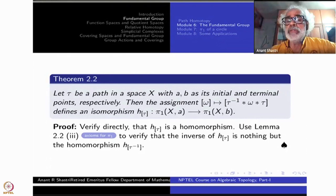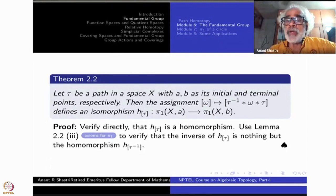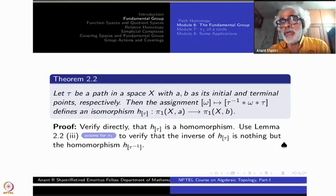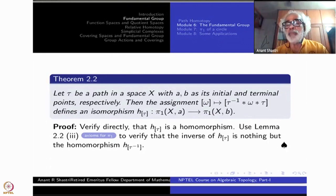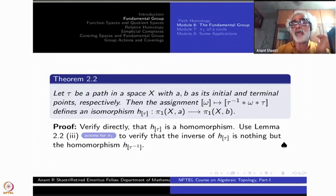H_τ being a homomorphism means H_τ(ω₁ ∗ ω₂) = H_τ(ω₁) ∗ H_τ(ω₂). To show this, take ω₁ ∗ ω₂ and insert τ⁻¹ ∗ τ in between — this can be done because τ⁻¹ ∗ τ is homotopic to identity, so the class doesn't change. Applying H_τ, the τ⁻¹ and τ appear on both sides, and the entire thing breaks into two brackets giving H_τ(ω₁) ∗ H_τ(ω₂).